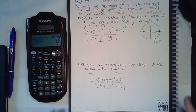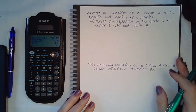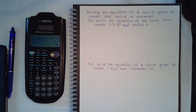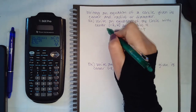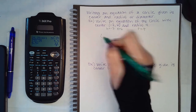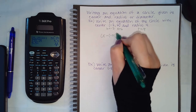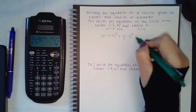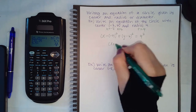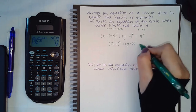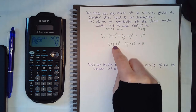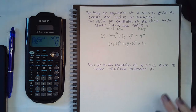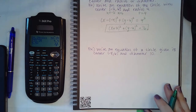Now let's increase the difficulty. We're writing the equation given the center and radius. The center is (-7, 6), so h = -7 and k = 6. Plugging into standard form: (x - (-7))² + (y - 6)² = 4². A double negative becomes a plus, and 4² = 16. You can remember that the value in parentheses changes sign. The final answer is (x + 7)² + (y - 6)² = 16.